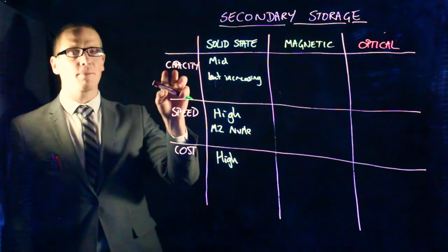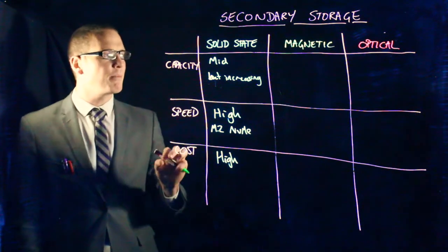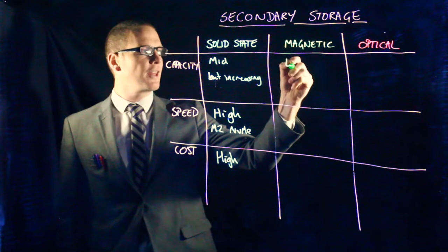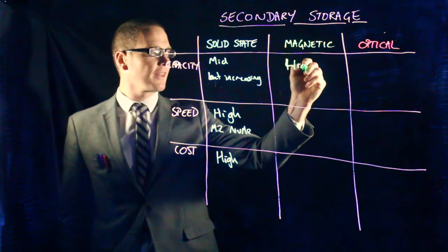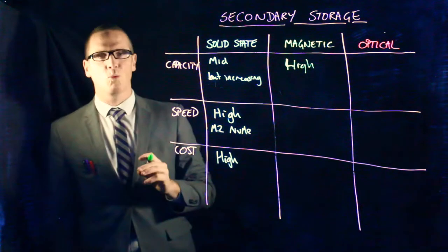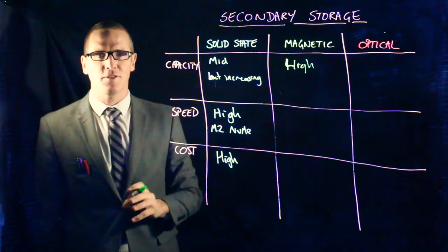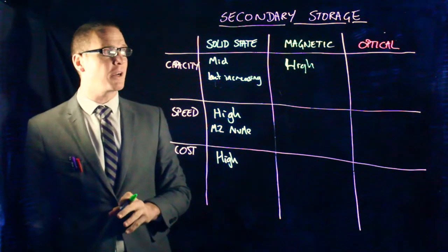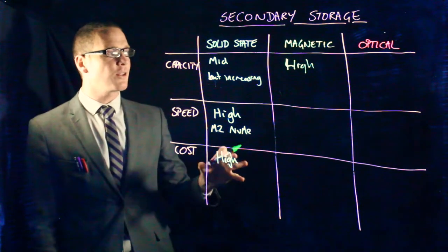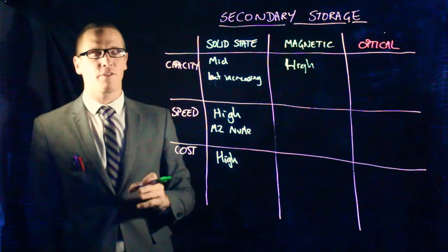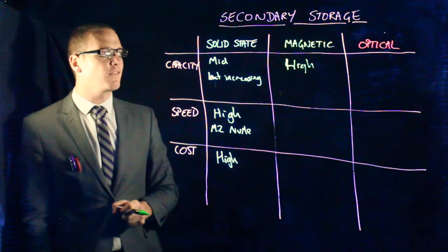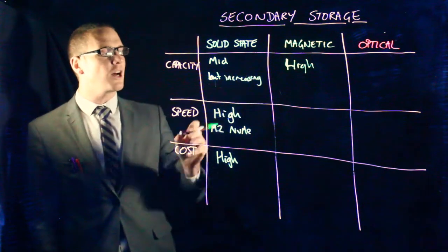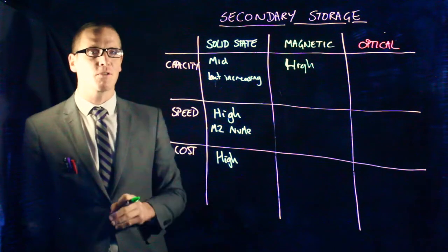Magnetic drives then, in terms of capacity, they are cheap per gigabyte. So they are high capacity. You can get 1, 2, 5, 10, 12 terabyte magnetic hard drives. So they can store, if you're using a factor of 1000, about 12,000 gigabytes of information. So a single hard drive can add massive storage capacity.